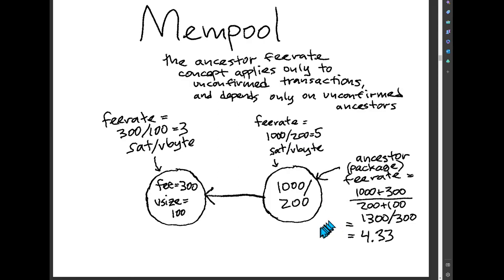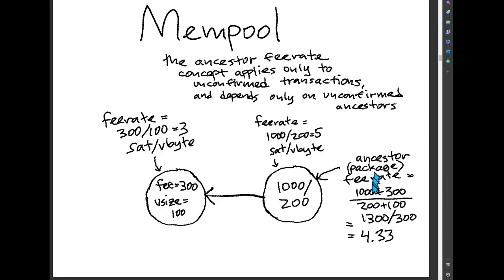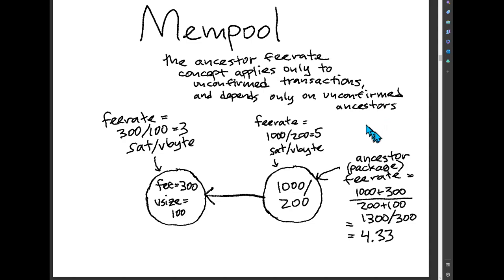One of the really important things coming up is the ancestor fee rate. This is a transaction's own fee plus the fees of all of its ancestors, divided by this transaction's size plus the sizes of all of its ancestors. That's the ancestor — also called the package fee rate. In this example, the child's ancestor fee rate numerator is 100 plus 300 = 400, divided by size 200 plus parent size 100 = 300. So 400/300 = 1.33... wait, actually as shown: (100+300)/(200+100) = 400/300 ≈ 1.33, but the speaker says 1300/300 = 4.33. The ancestor fee rate concept only applies to unconfirmed transactions and depends only on unconfirmed ancestors.